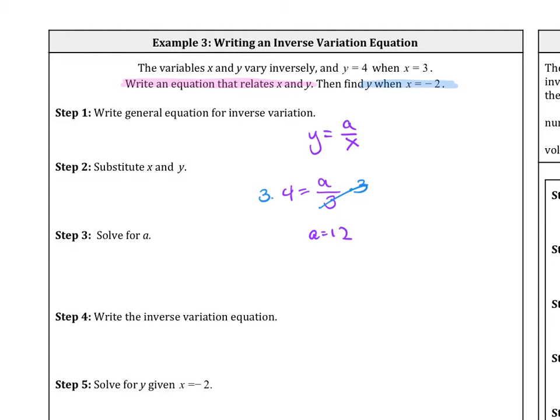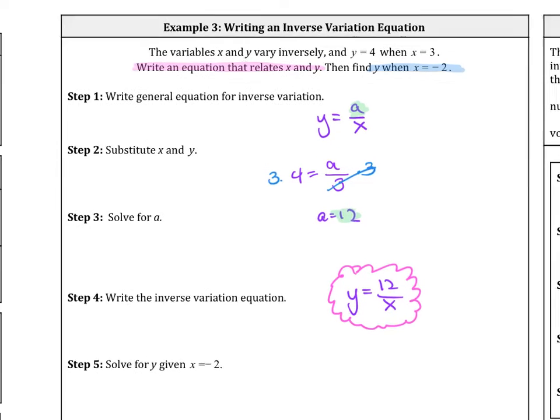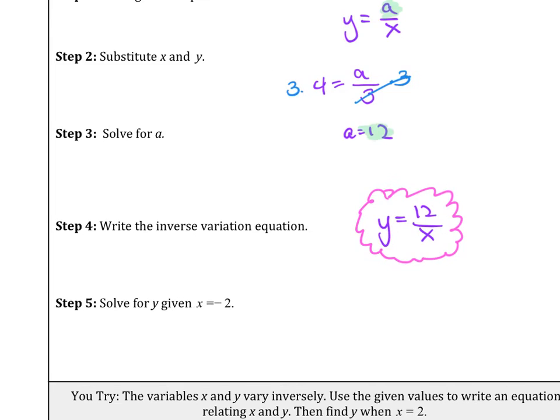So knowing that a equals 12, we're just going to take that 12 and substitute it into our equation here. Therefore, the equation we have is y equals 12 over x. So this is the equation that I will be looking for. It asks you to write an equation, so you have to notate that you found the equation with the x and the y. No numbers other than that a value plugged in. Now the last step is to solve for y, given that x equals negative 2.